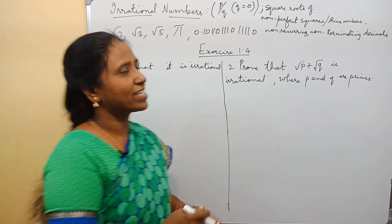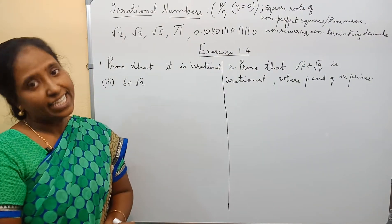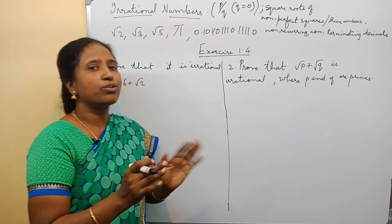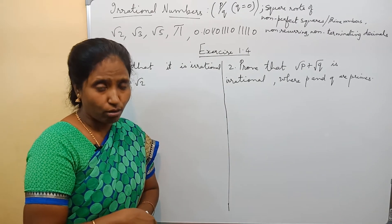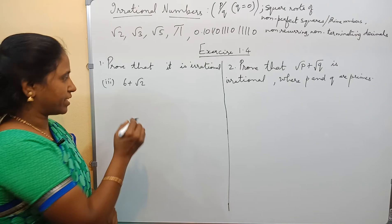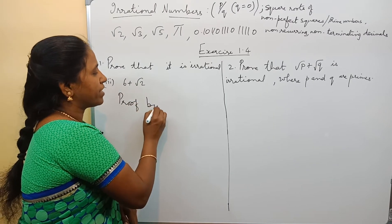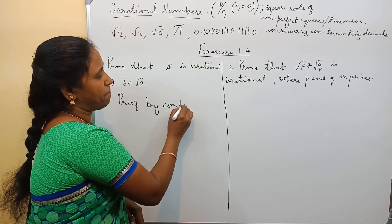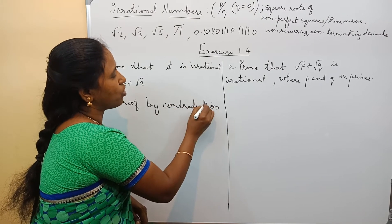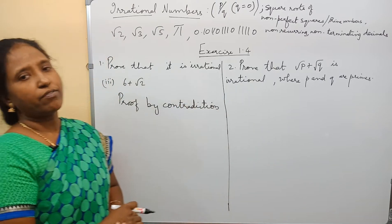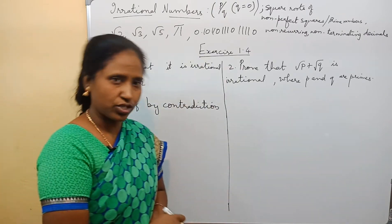Now, let us come to exercise 1.4. We need to prove that it is irrational. In order to prove that it is irrational, we are going to use a method called proof by contradiction. Contradiction means contrast — contrast means opposite. When one is contradicting the other, one is opposite to the other, we can show that the assumption is wrong. That is the proof by contradiction.